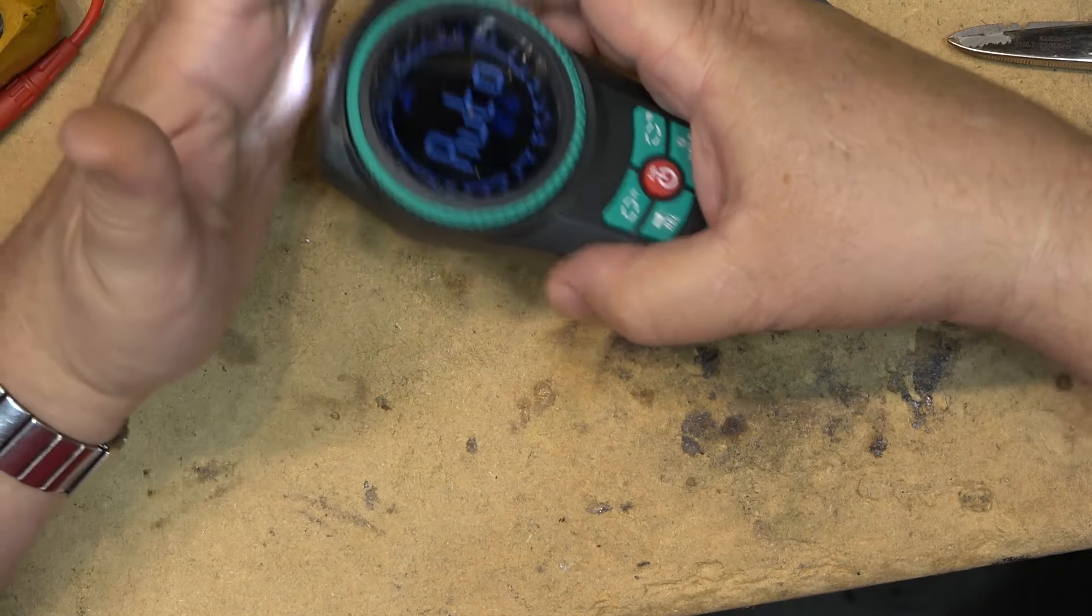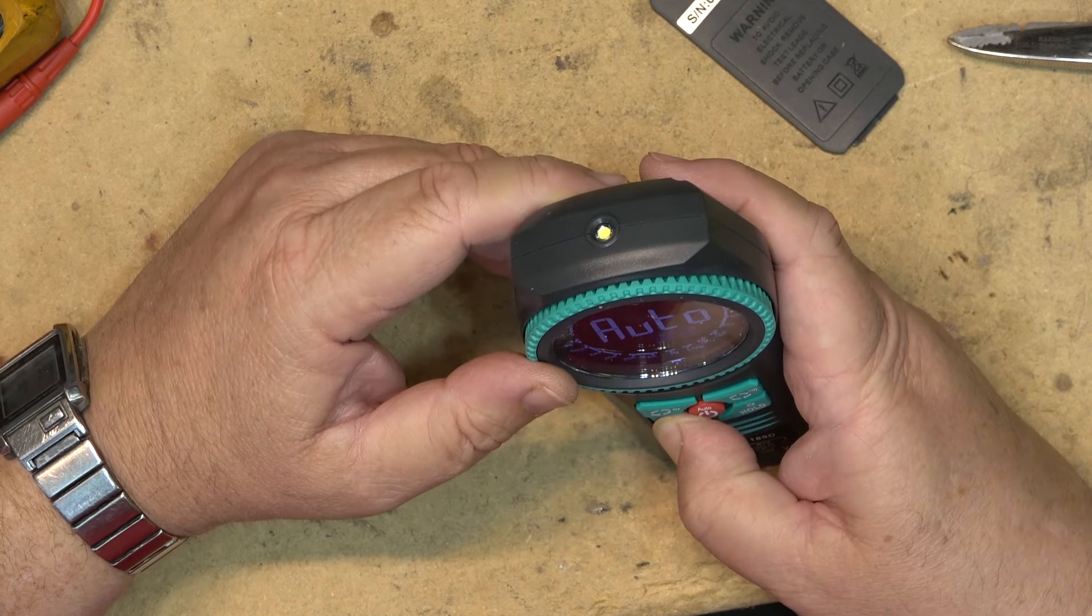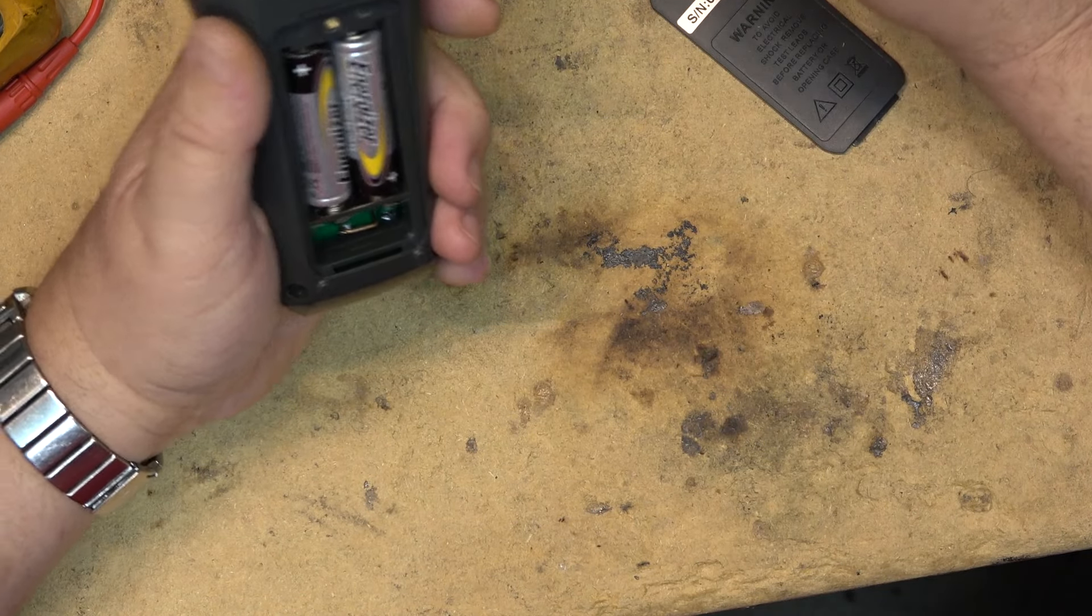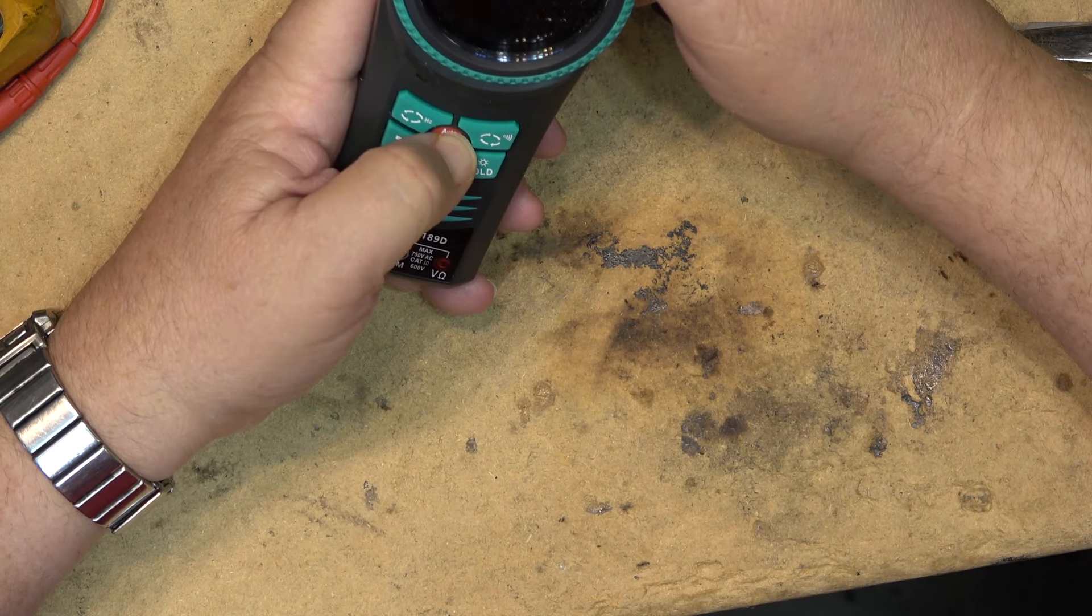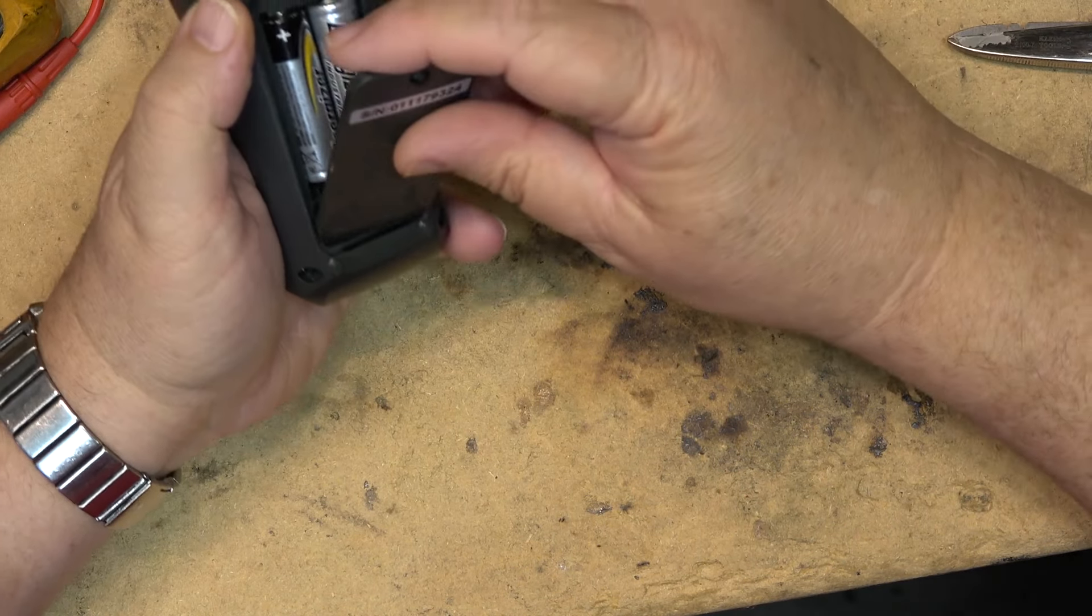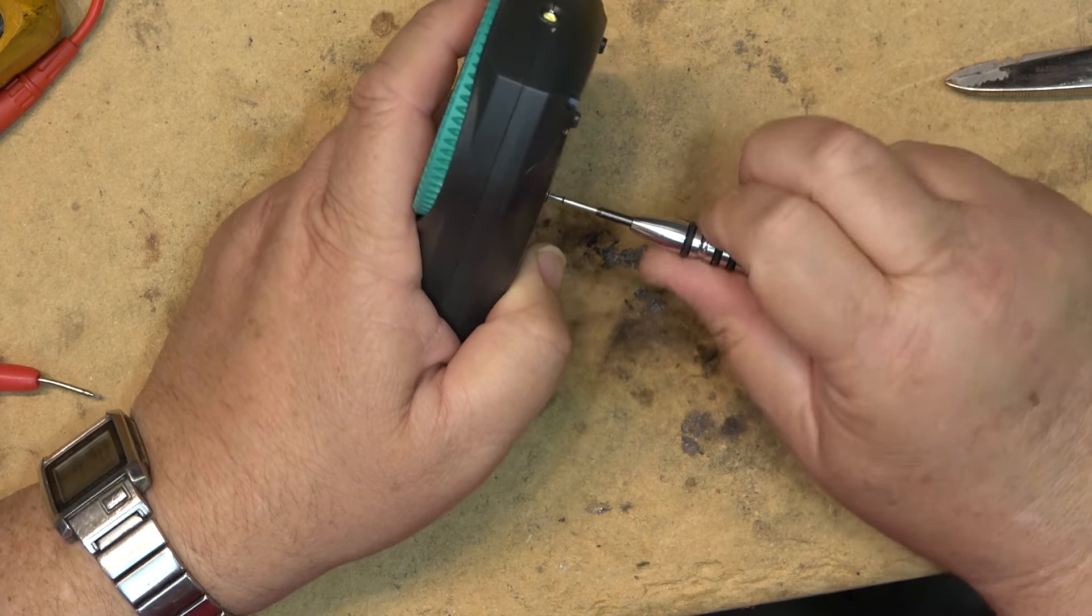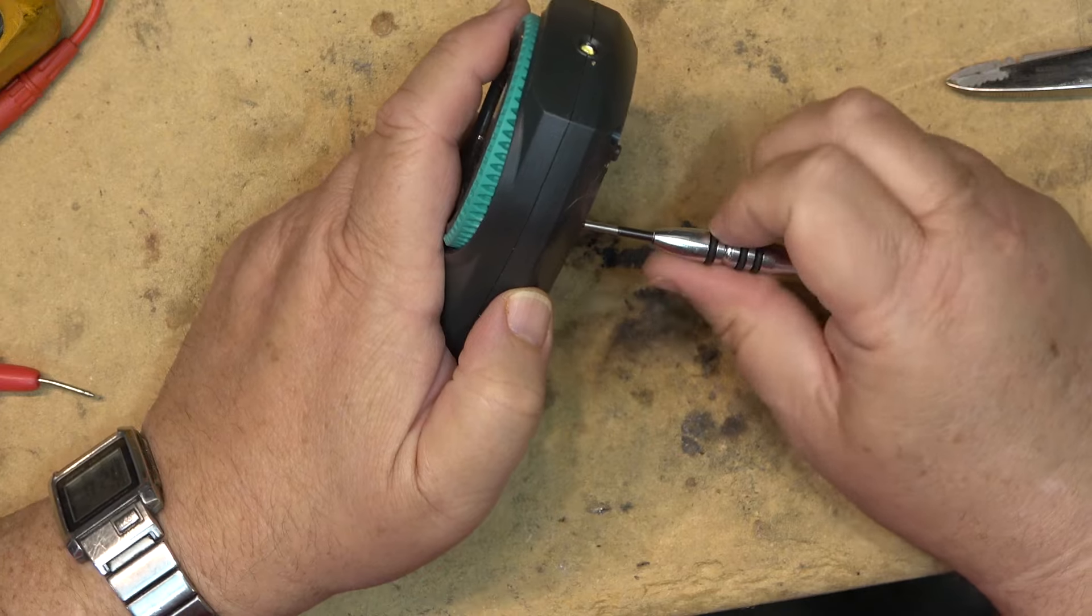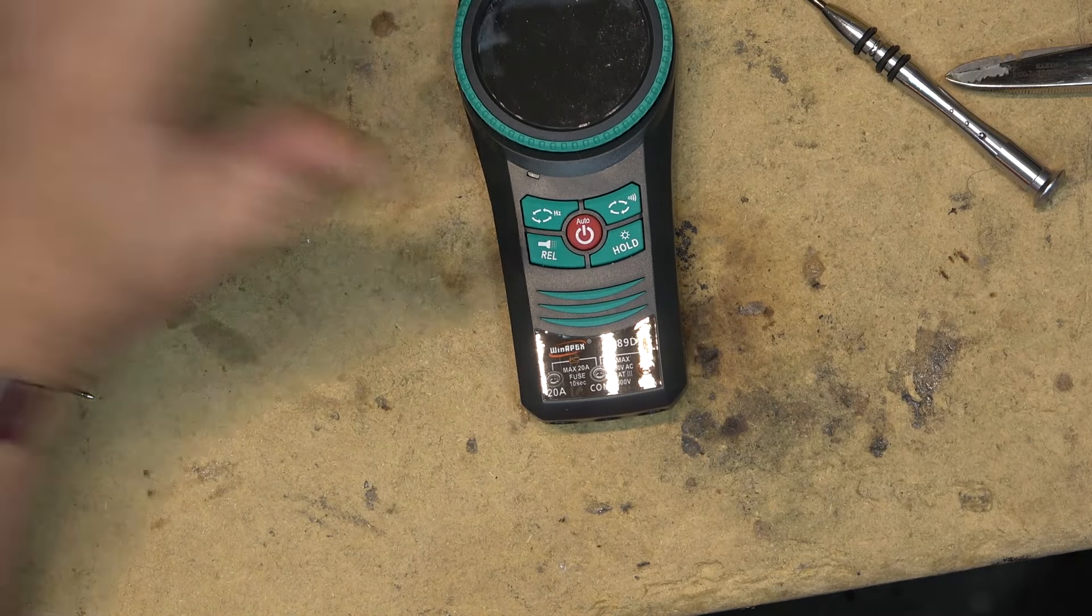And then press and hold again and the light goes out. That's pretty much all I can show you on this unit because, well, it's a meter. There's not a heck of a lot to show, but I'll throw the link in. It came from Banggood. I'll throw the link in the description and I will say thanks for watching and we'll catch you in the next one. Bye for now.